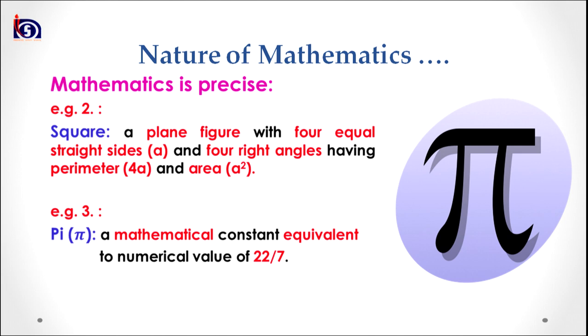Isn't it a complete definition of a circle? Now look at example two: a square is defined as a plane figure with four equal straight sides of length a and four right angles (90°), having perimeter 4a and area a². Isn't it a complete, precise, and exact expression to form an image of what a square is?